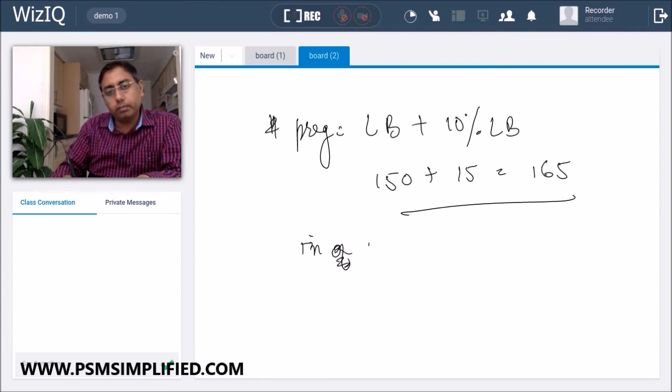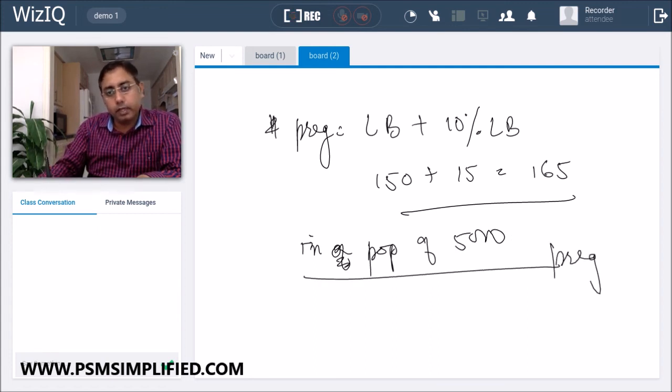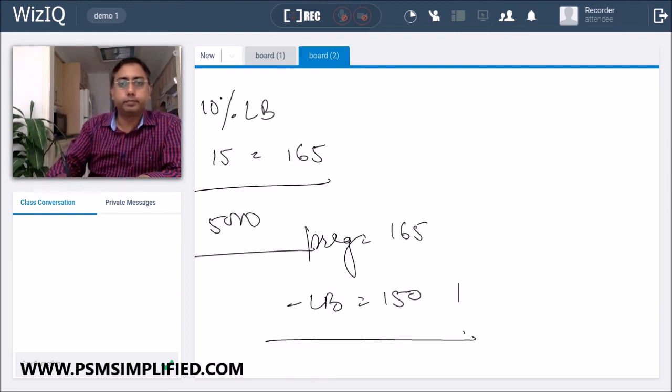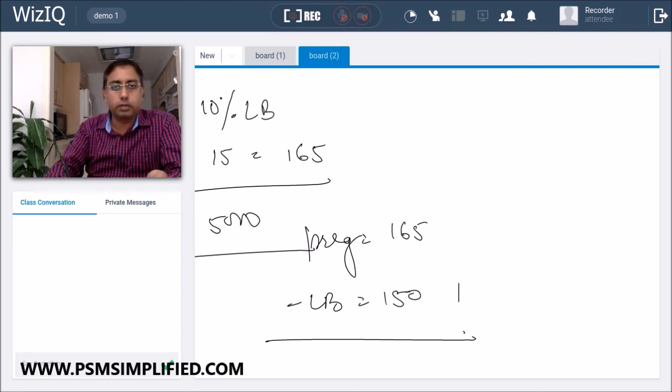So in a population of 5000, pregnancies will be 165 and live births would be 150. That's it for the MCQ, thank you.